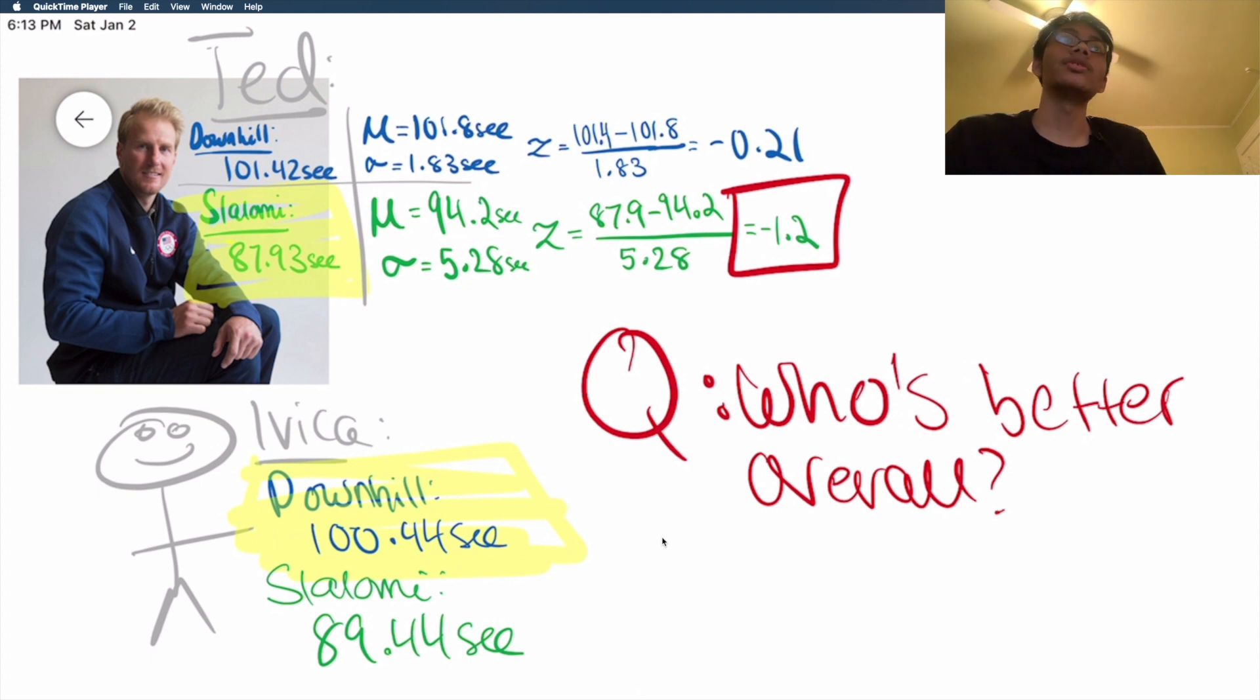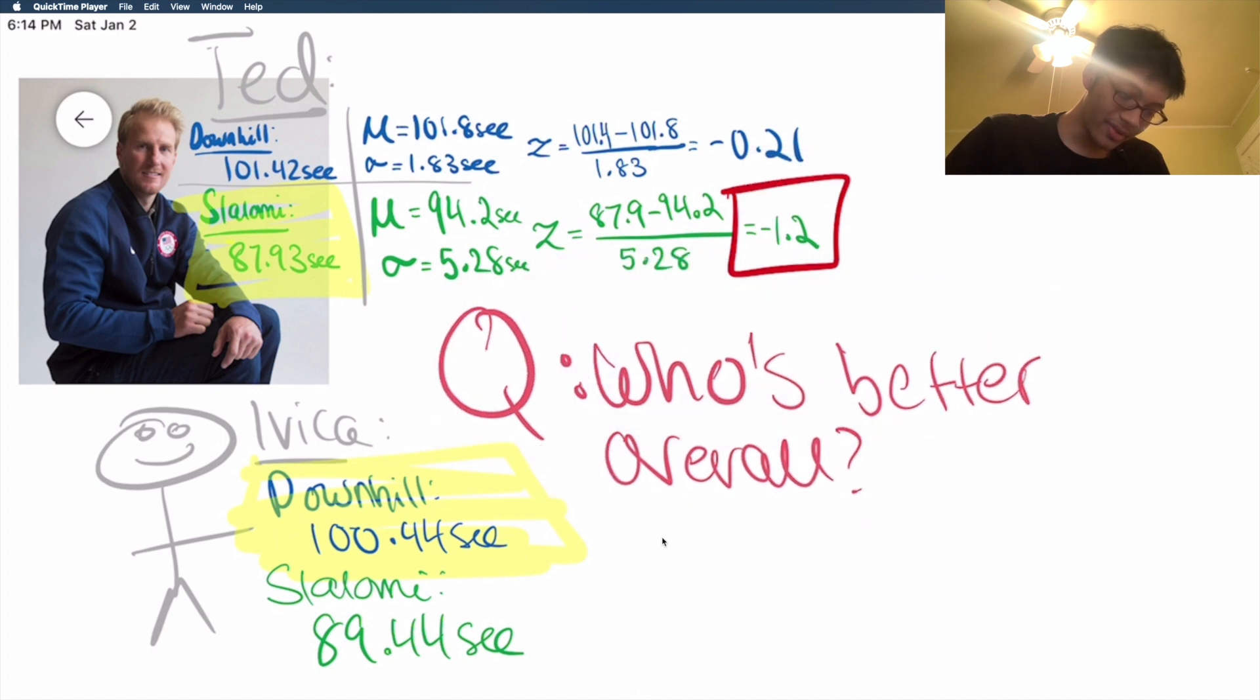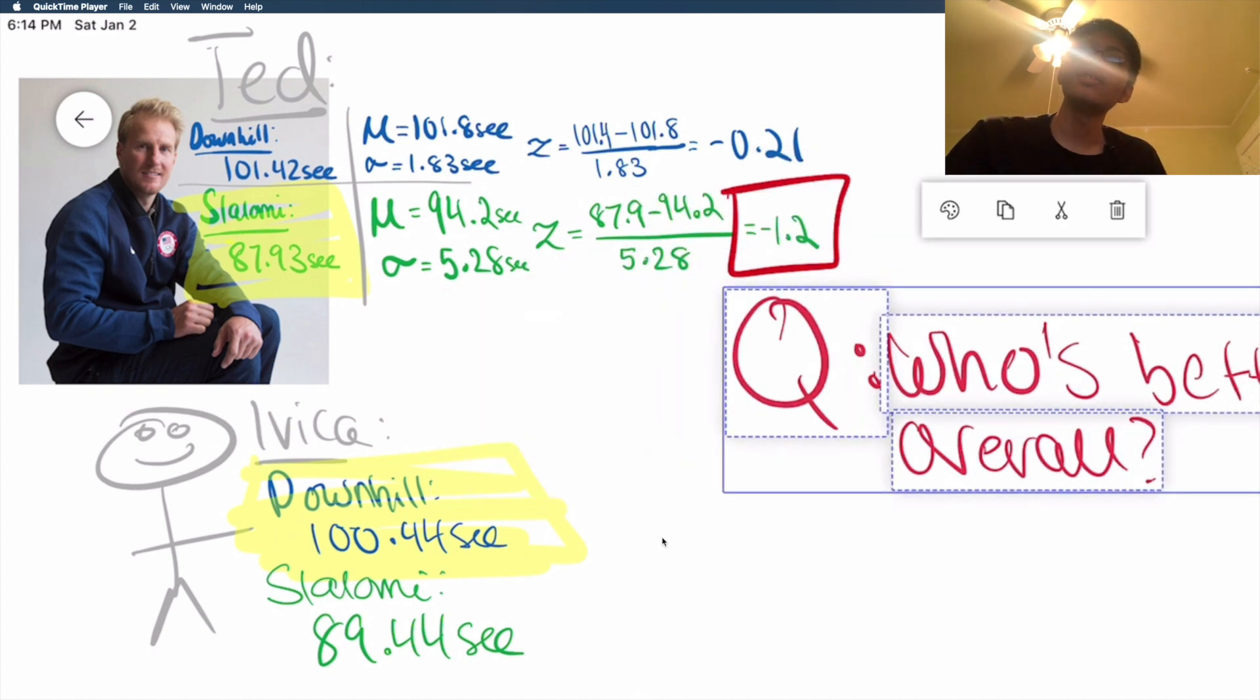Clearly, Ted's got better stats for Slalomi and Ivica's got better stats for downhill. But who's better overall? That's the question. Well, to answer that question, we're gonna do something pretty special. We're gonna find Ivica's z-scores as well. So let's find Ivica's z-scores. What's Ivica's z-score for downhill? Let's go ahead and compute that.